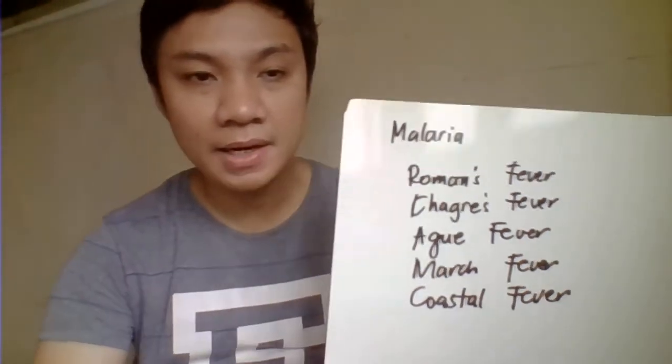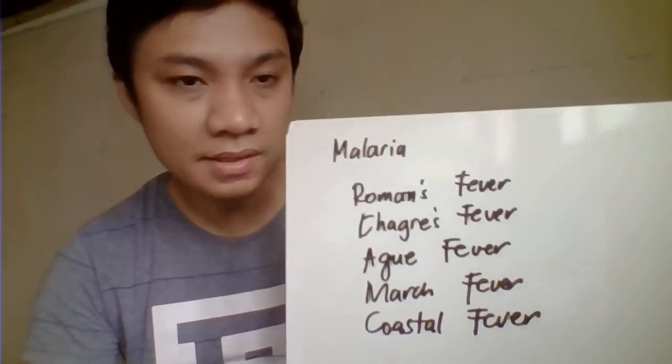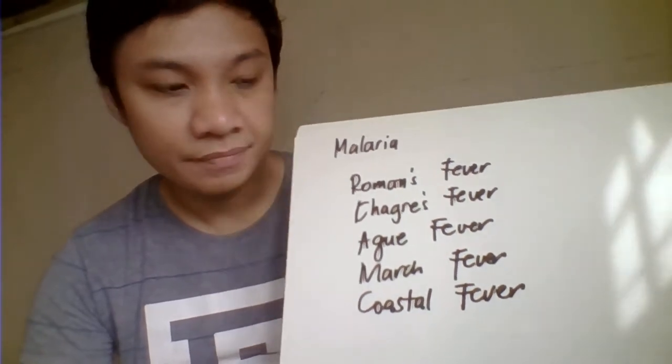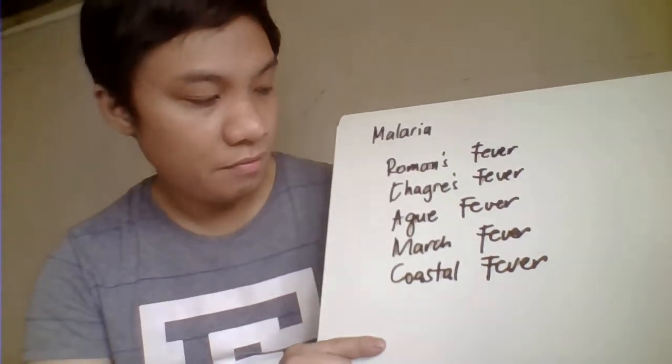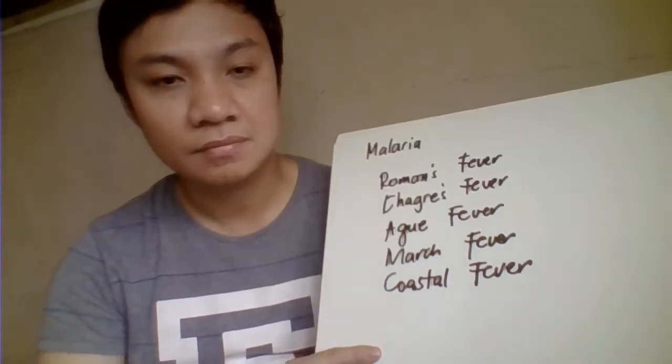We're going to discuss today about Malarial Infection. Malarial Infection is primarily caused by the Plasmodium species. The other names for Malarial Infection include Aroma's Disease, Chagas Disease, March Fever, and Coastal Fever.